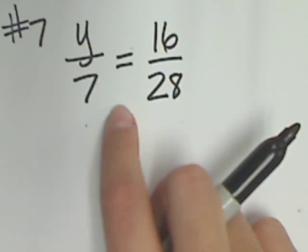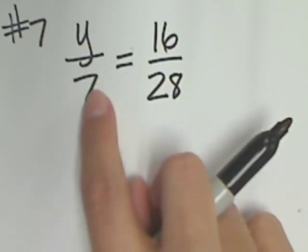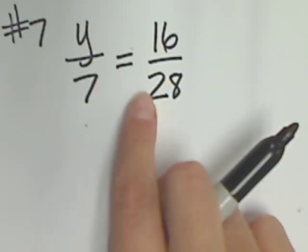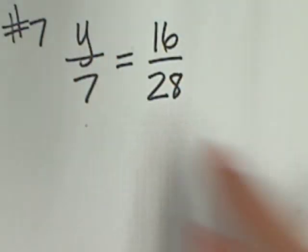Now, for a problem like this, this equal sign is telling me that yes, both of these are exactly the same, they are equivalent. But the problem is that we need to figure out what y is equal to. So, we're still going to cross multiply.